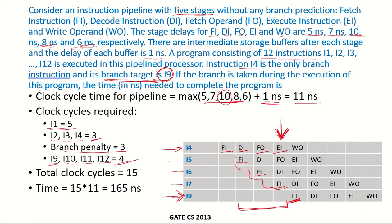So this will require 4 clock cycles for i9 through i12. The total clock cycles are 5 plus 3 plus 3 plus 4, giving a total of 15 clock cycles. With a clock cycle time of 11 nanoseconds, 15 times 11 gives us 165 nanoseconds.